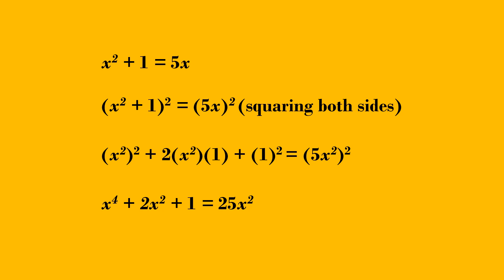Use formula, square of a plus b is a square plus twice ab plus b square. The right side, of course, is 25x square.